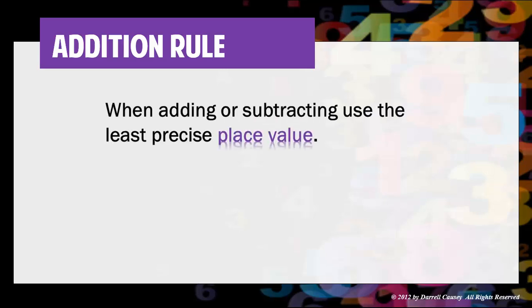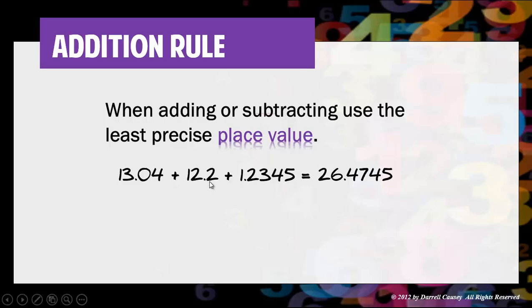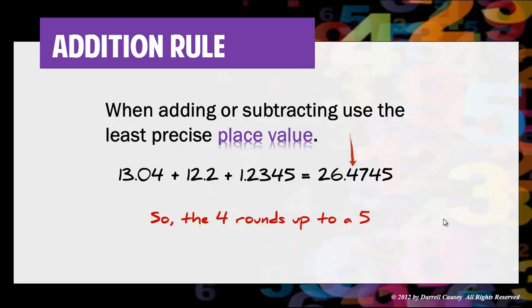The addition rule is for addition and subtraction. When adding and subtracting, you use the least precise place value. So let's look at some numbers here. If you add those all up you get 26.4740. What I want you to take notice of is that the least place value is the 12.2. So we're going to round to the tenths place — that's the best we can do.